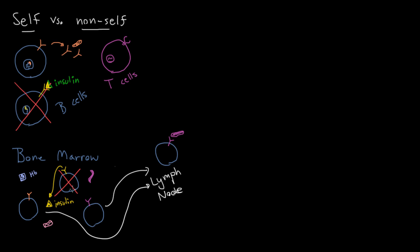This weeding out of cells that react to self proteins is the first of two mechanisms that the body uses to avoid reacting to self. The same exact thing happens for T cells, except it doesn't happen in the bone marrow — it happens in the thymus, because that's where T cells mature. In the thymus, T cells differentiate, each one gets a unique receptor, and the ones that react to self too strongly are killed.